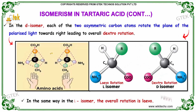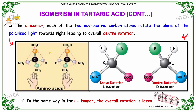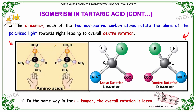In the D isomer, each of the two asymmetric carbon atoms rotates the plane of polarized light towards the right, leading to overall dextrorotation. In the same way, in the L isomer, the overall rotation is levorotatory.